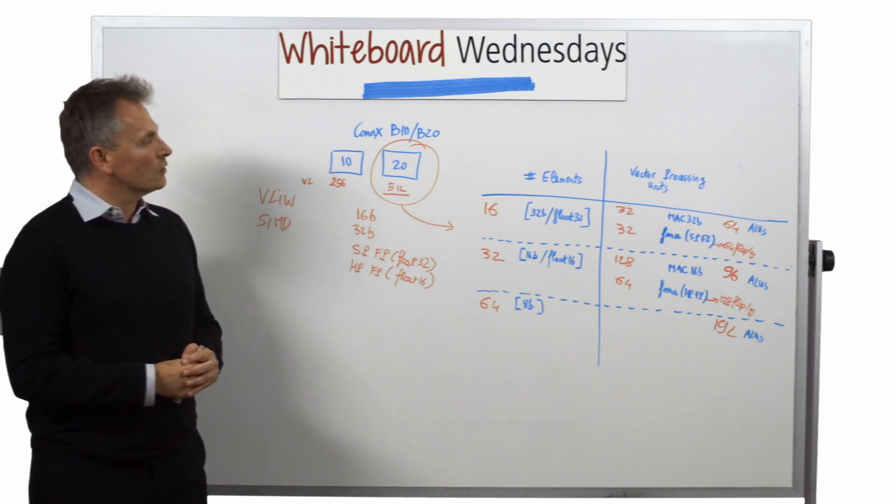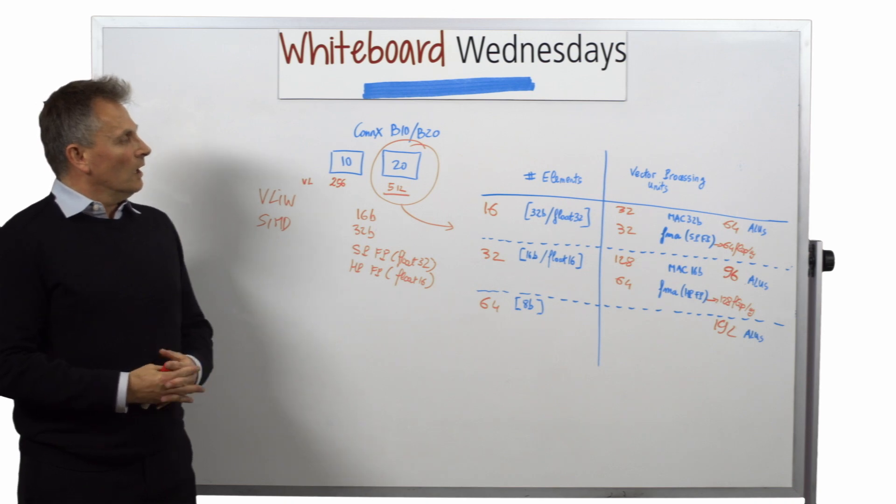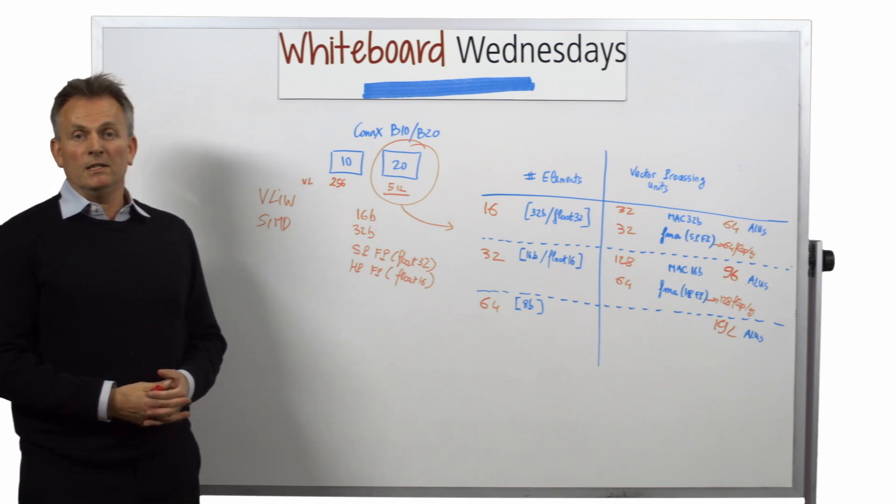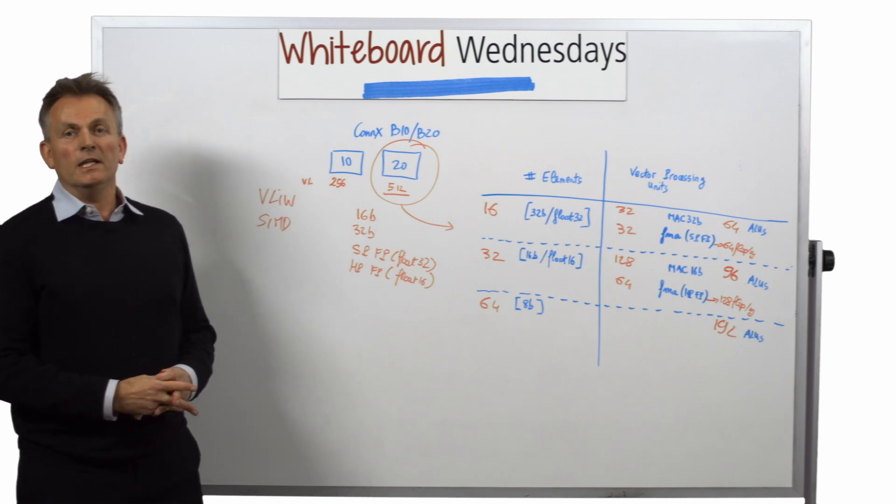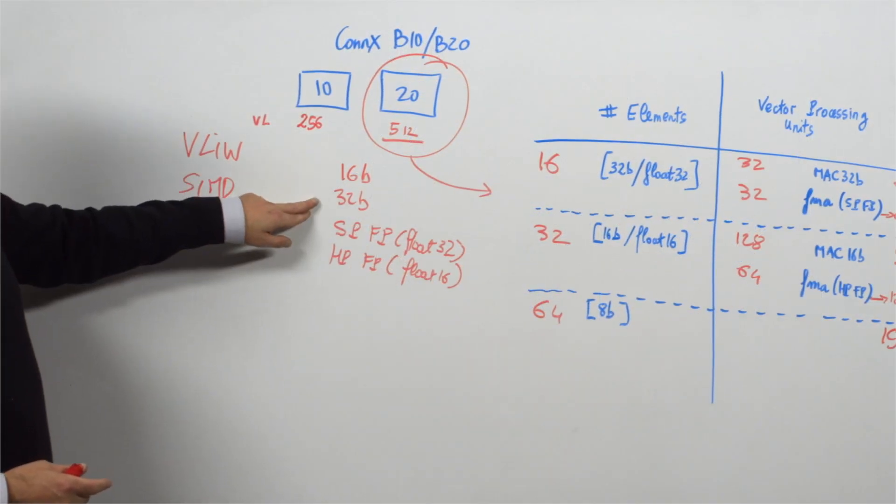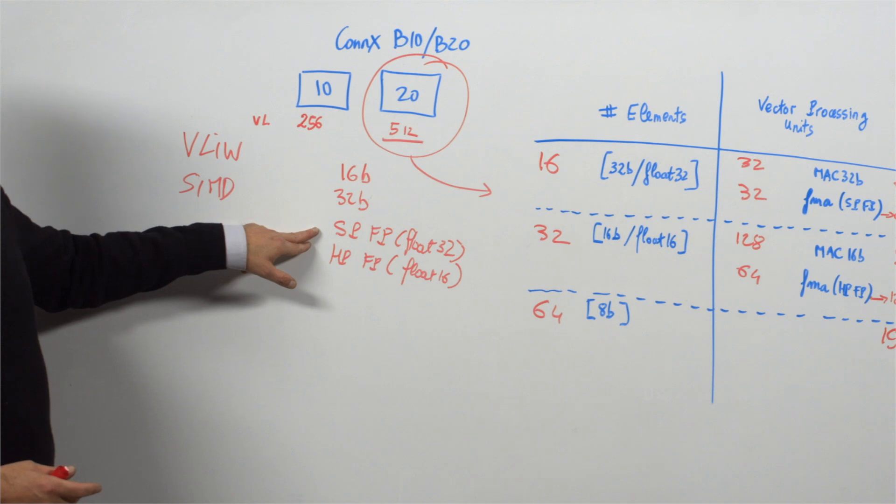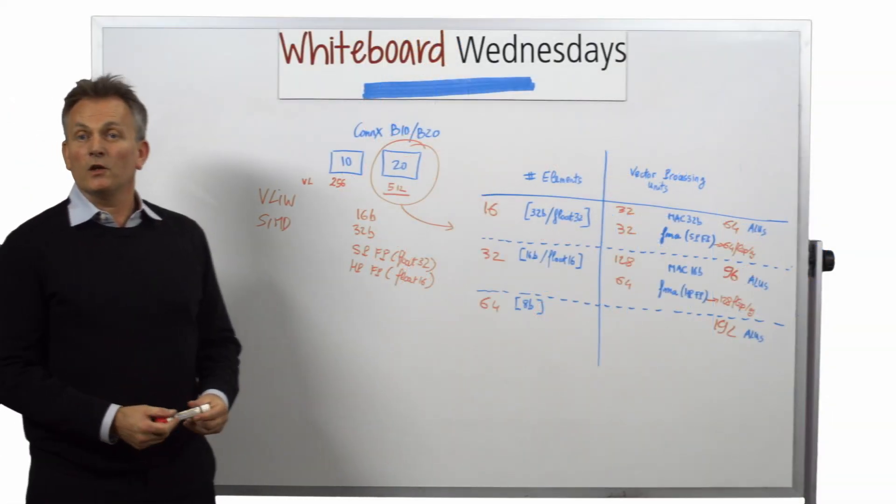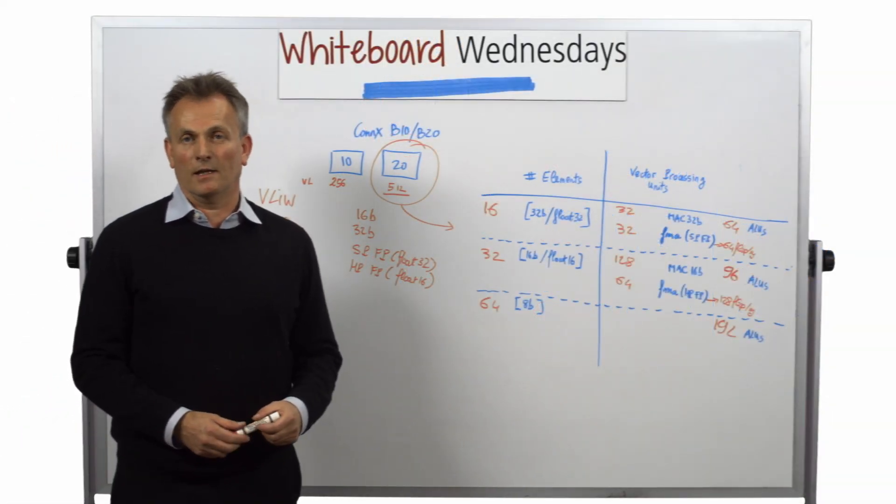Summing up this talk is showing the throughput capability of the B10 and B20 in order to support the various data types, 16-bit, 32-bit, single precision floating point, and half precision floating point. Thank you for watching. See you next time.